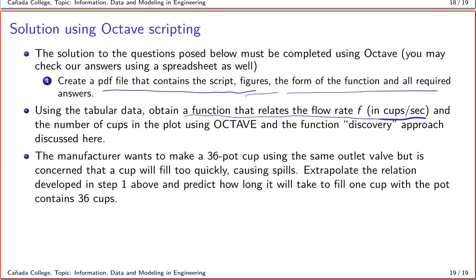The second part is that the manufacturer you're working for wants to make a 36-pot coffee cup using the same outlet valve but is concerned that the cup will fill too quickly, causing spills. Remember, you start out with some volume in the coffee pot, and the outlet valve then fills the coffee cup based on the initial volume. So if I now fill it up to 36 pots, is it going to take too short a time to fill the coffee cup, leading to spills? That's what you will have to figure out using your Octave scripting process.